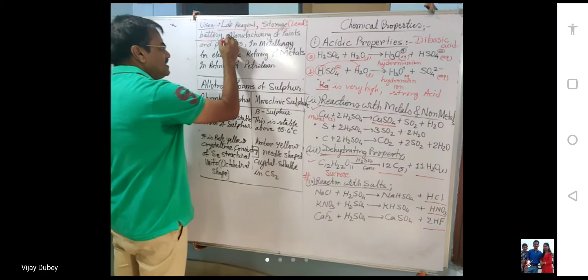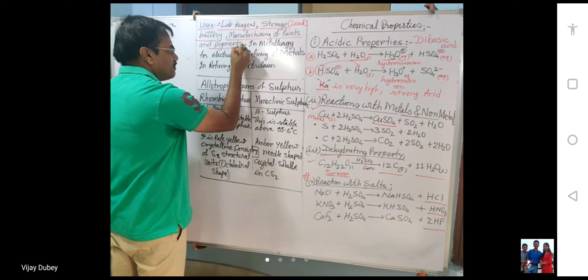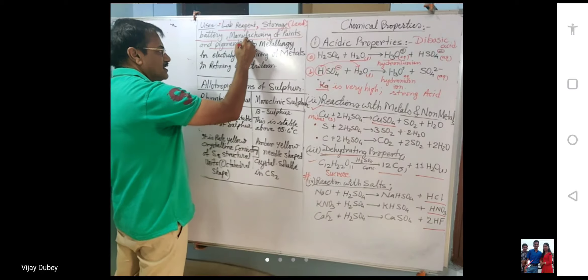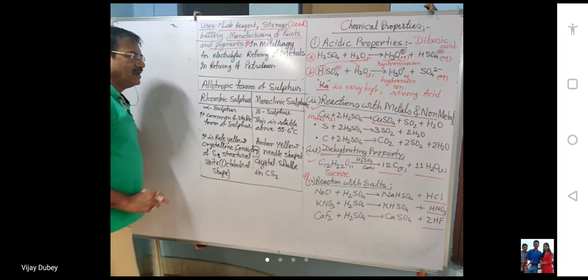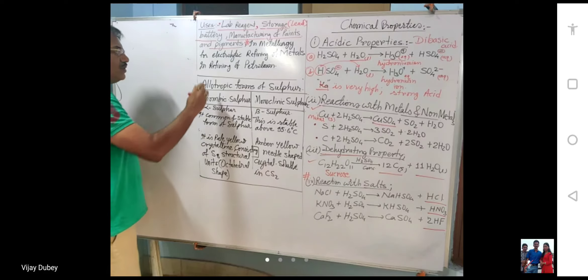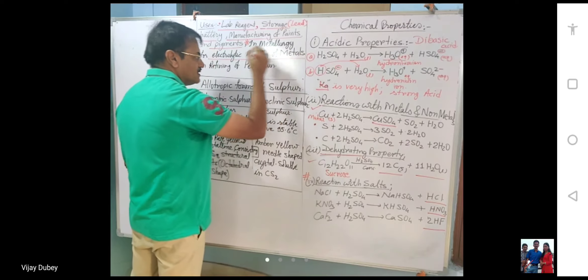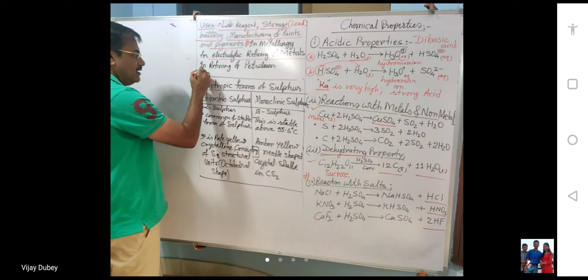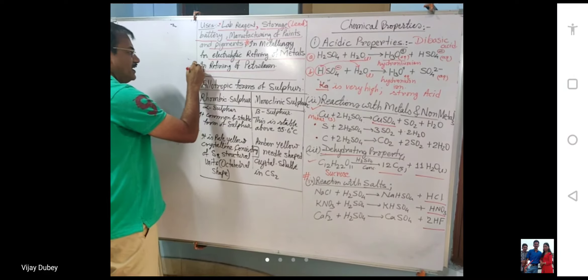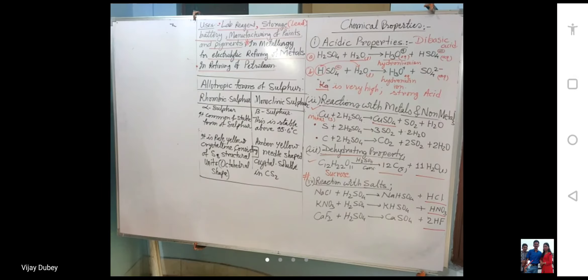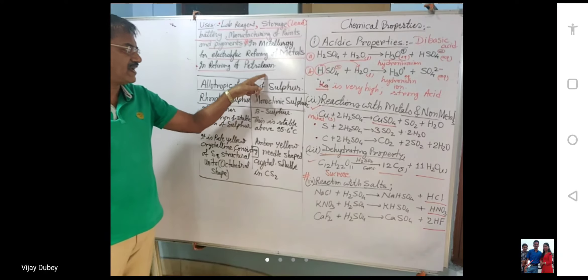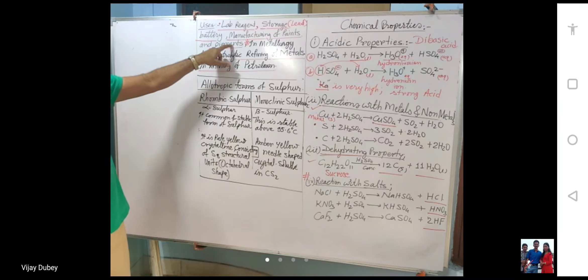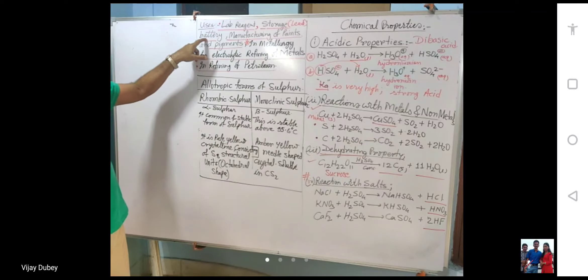Sulfuric acid is used in the manufacturing of paints and pigments. It is used in metallurgy for the electrolytic refining of metals. It is also used in the refining of petroleum products and for the extraction of metals.